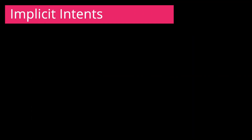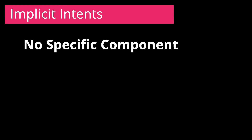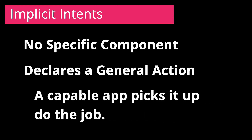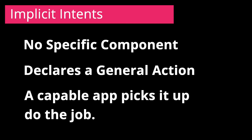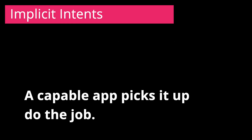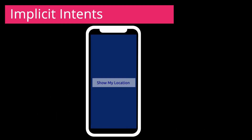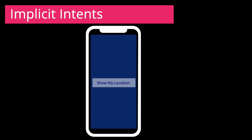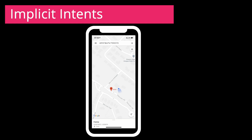Implicit intents do not name a specific component but instead declare a general action to perform, which allows a component from another app to handle it. For example, if you want to show the user a location on a map, you can use an implicit intent to request that another capable app, for example Google Maps, show a specific location on the map.